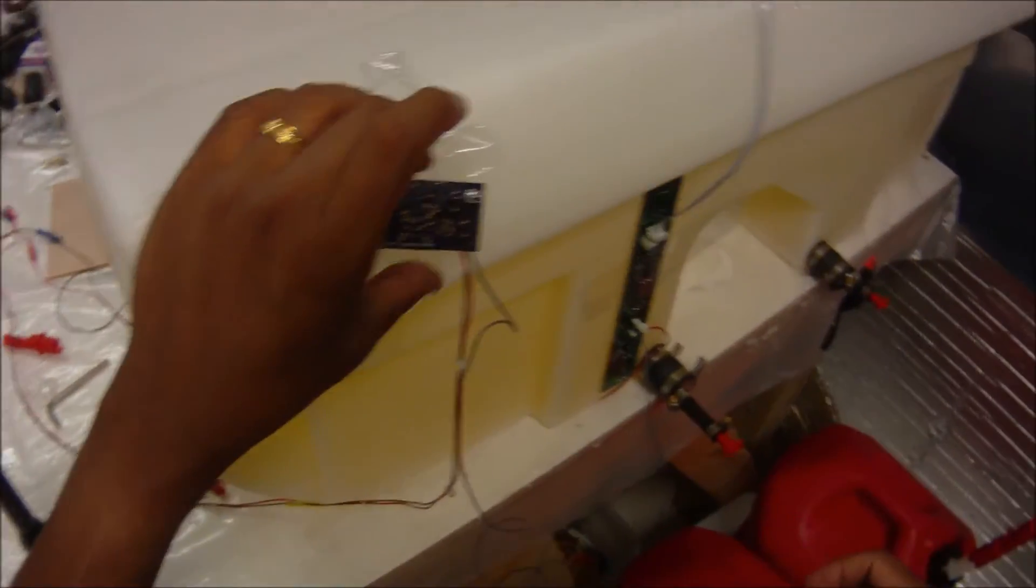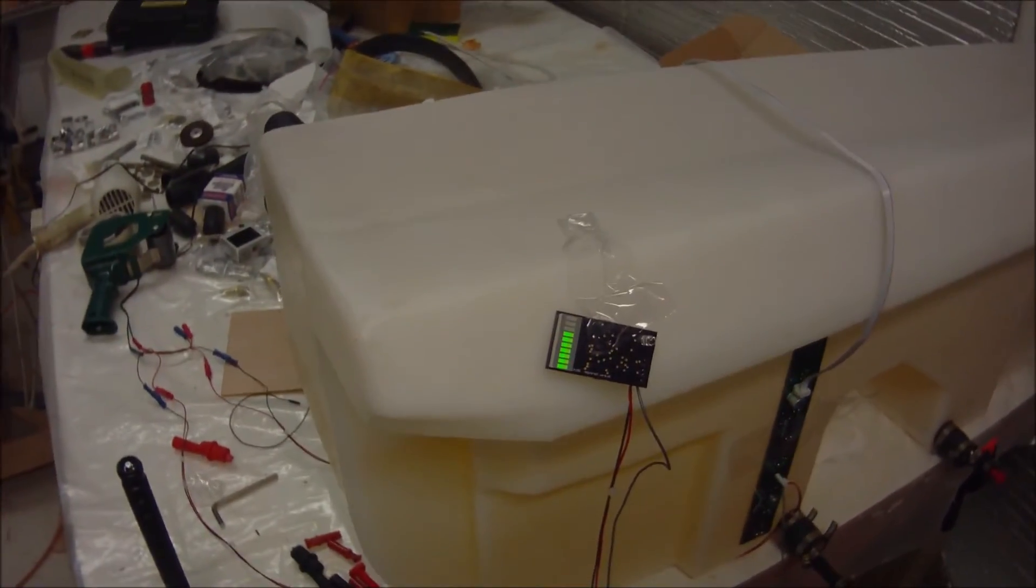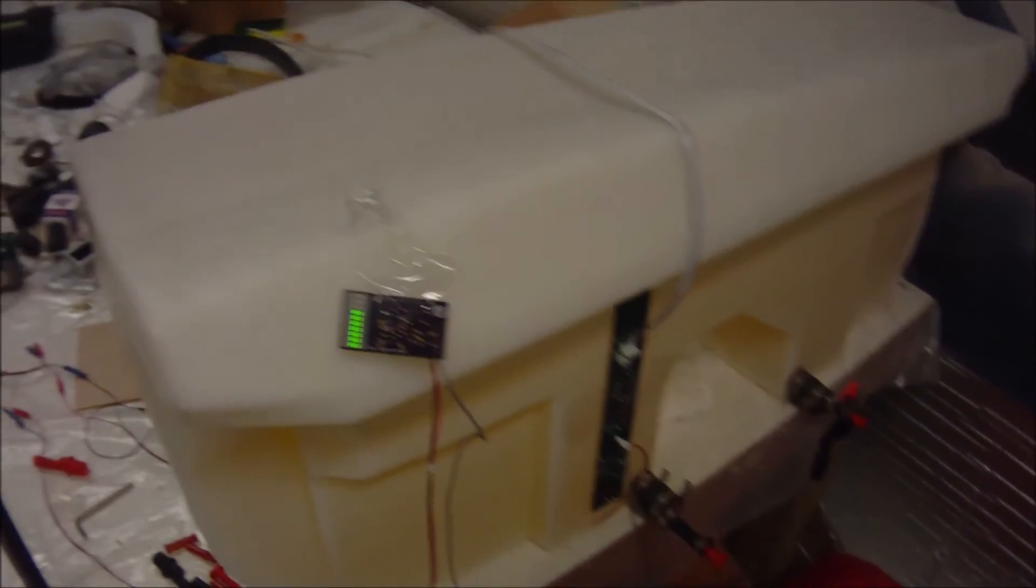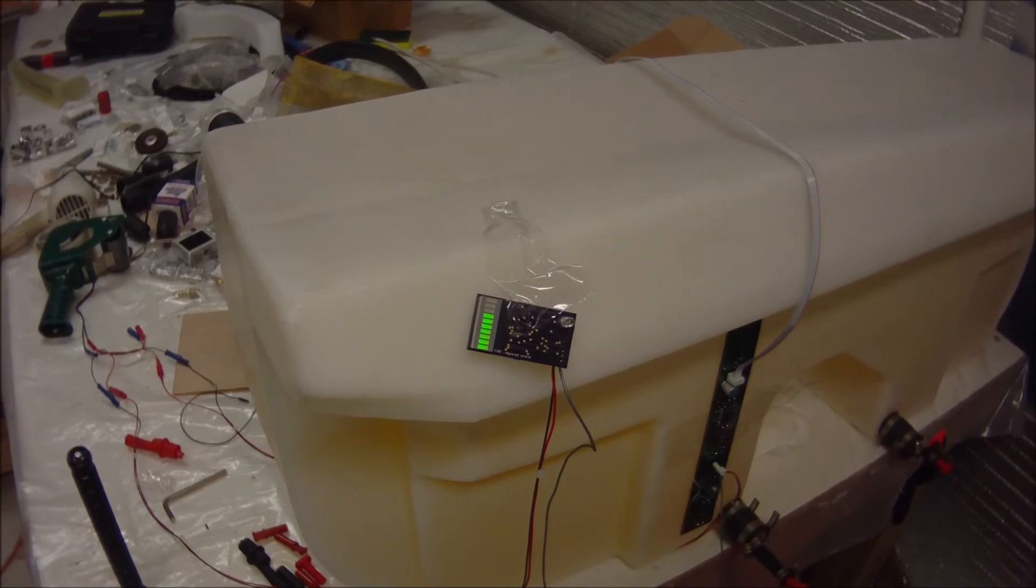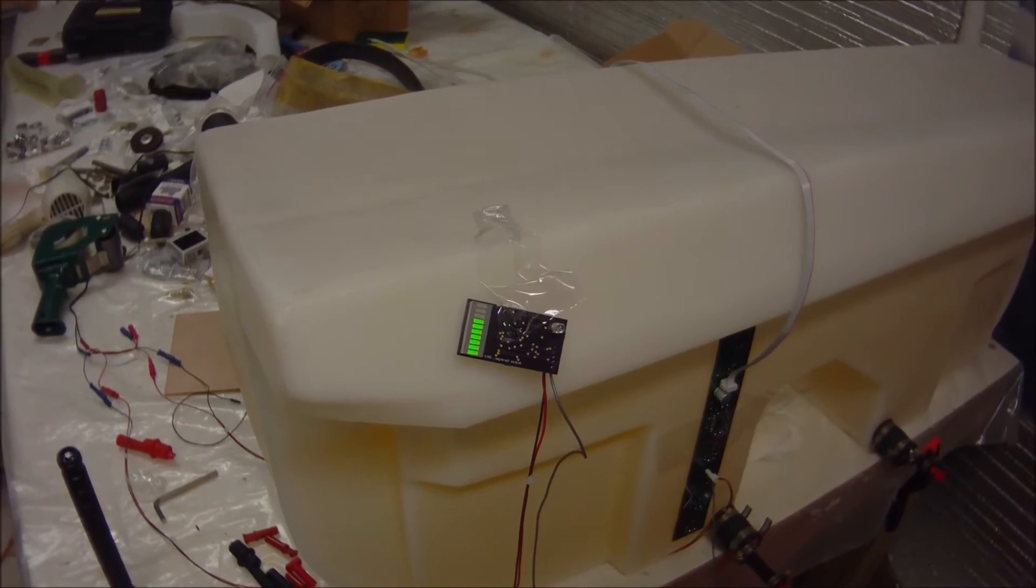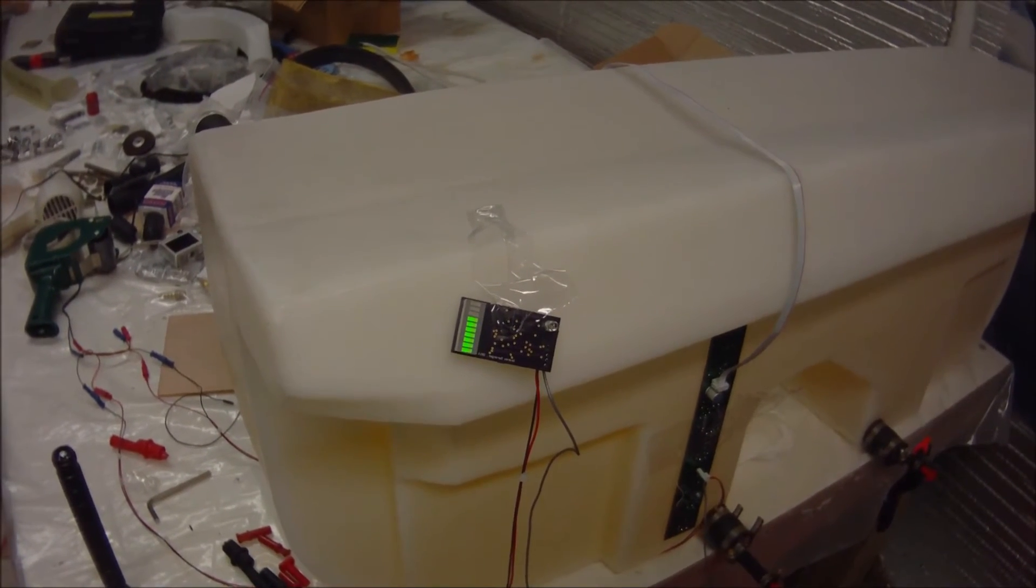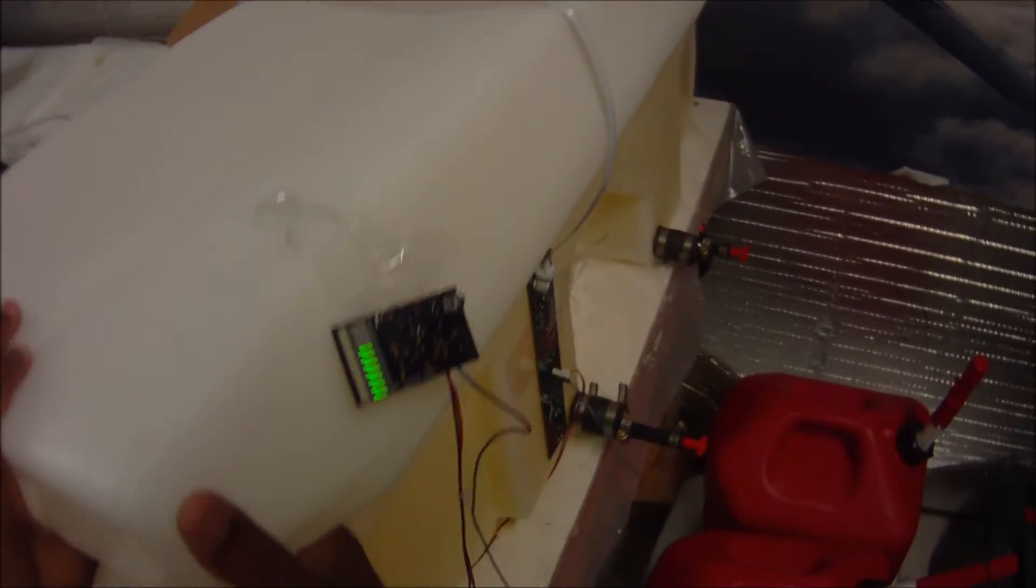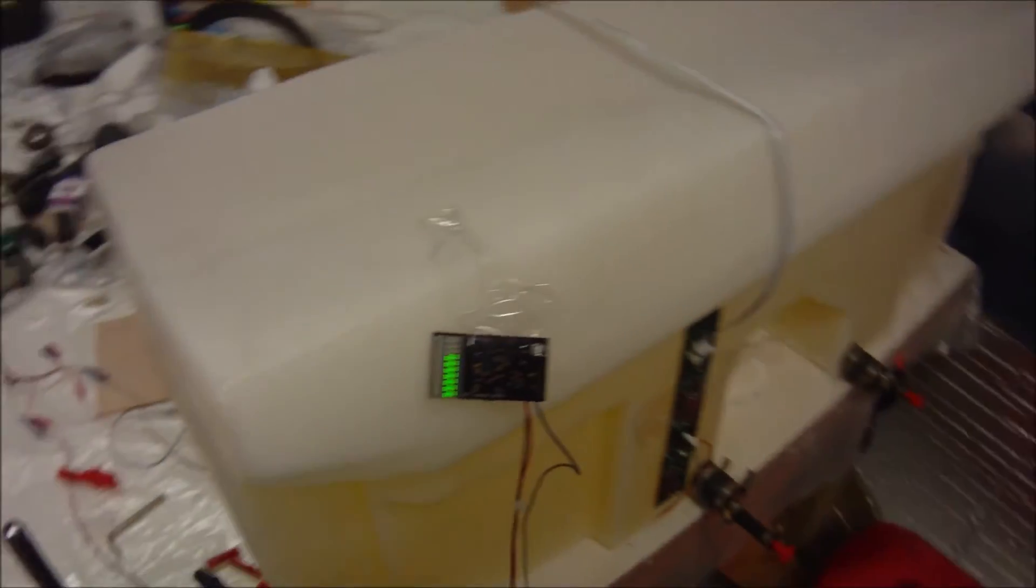And let me turn the power on so you can see how it works. Okay, so there it is. It's showing 7 bars out of 10 for the fuel level. If I rock the fuel tank so that the fuel starts to slosh a bit, you'll see the LED bars showing some activity. So there it is.